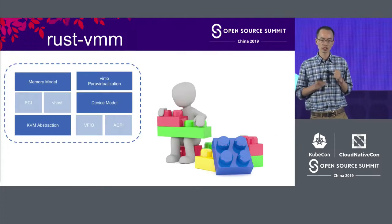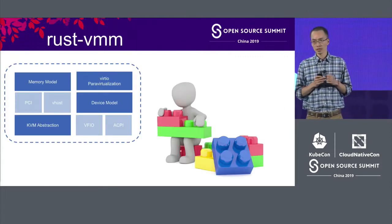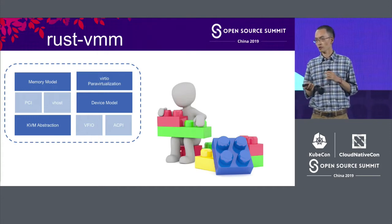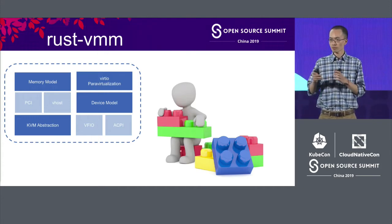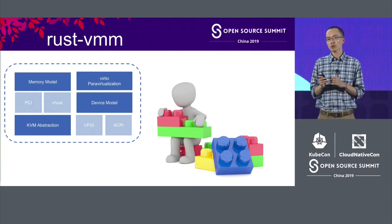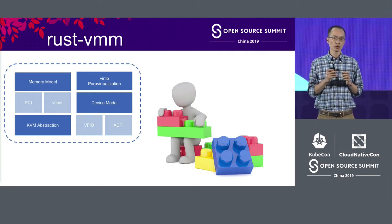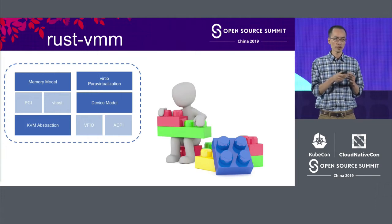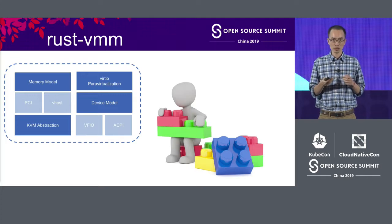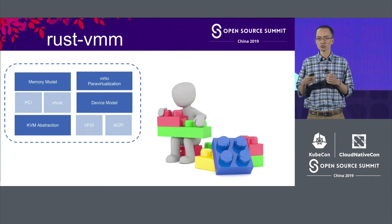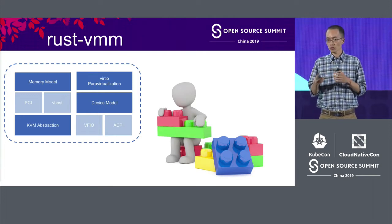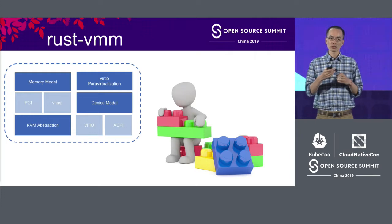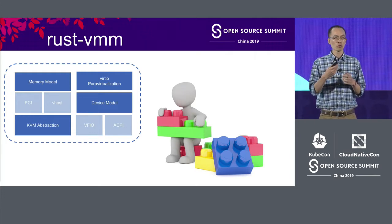A recent answer to this shift is Rust-VMM. This project actually comes out of Firecracker and CrossVMM, but it goes much broader. A primary goal of Rust-VMM is to build custom VMMs easily. You can consider it as a library, or like Lego — a set of virtualization components. Anyone can pick and assemble them to build a custom hypervisor very quickly. On top of such a trusted base, people can focus more on the differentiating features in their own usage.